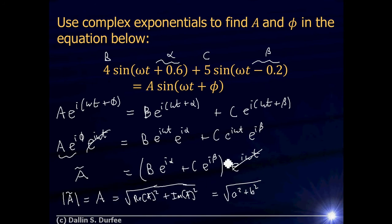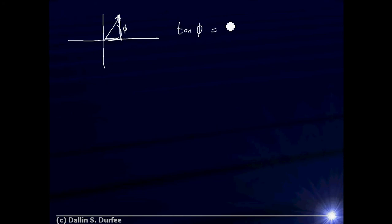How do I find the phase phi? If I plot A-tilde in the complex plane, the magnitude is the distance from the origin and phi is the phase angle. If I call the real and imaginary parts little-a and little-b, then the tangent of phi equals b over a. So I can find phi by taking the arctangent of b over a.